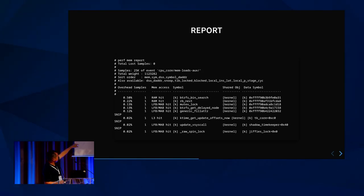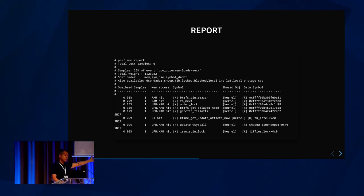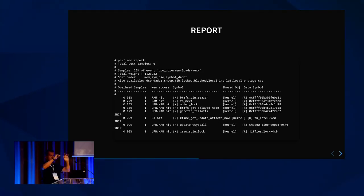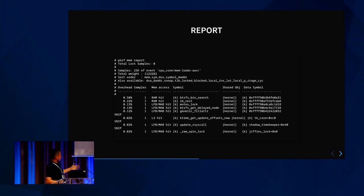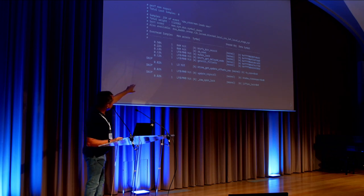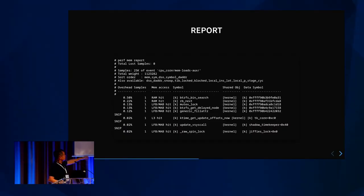The line fill buffer combines loads to avoid requesting the same cache line multiple times — if you have a request for a cache line and it's outstanding and you get another for the same cache line, it's a hit there and you won't emit a new request to the slow L2, L3, etc. Also available is information about snoop operations, TLB involvement, whether it was a locked operation, whether it was blocked, the local instruction latency, and so on.